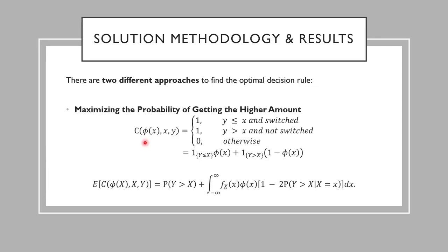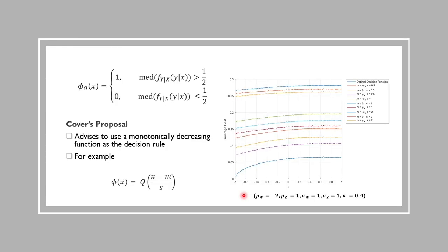When we take the expectation of this function, we see that it contains a term which is immutable plus a term which is mutable by decision rule phi. We should pick a decision rule which minimizes this expectation since we don't want to get penalty as the player. The optimal decision rule which minimizes the expectation is given here. It simply states that, if the median value of this conditional pdf is greater than 1 over 2, switch, and don't switch if this condition is not met.